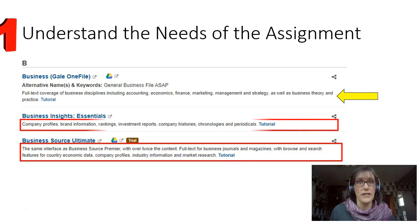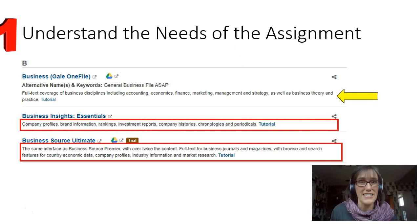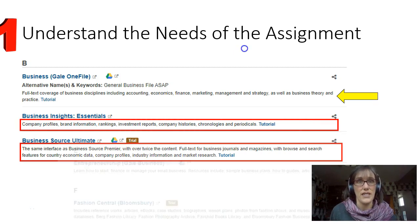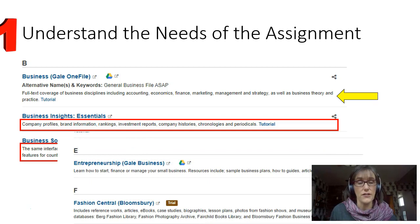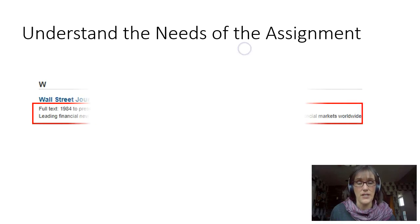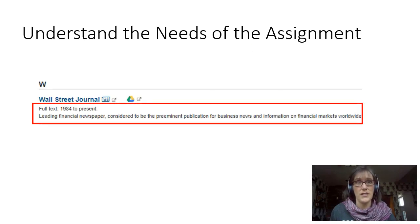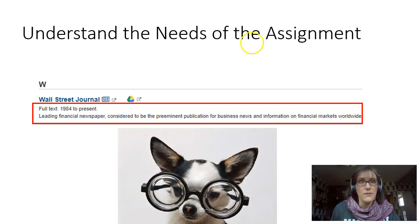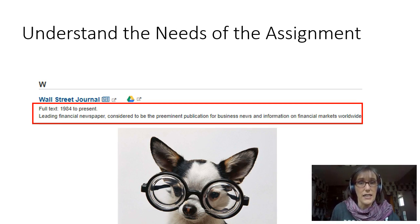Looking for company financial data and reports? Start with Business Insight Essentials. Needing a business plan or financial information? Look into the Entrepreneurship Database. And do you need up-to-date articles on current trends and economics? Look no further than the Wall Street Journal. While you may end up searching a couple of different databases, reading the descriptions and understanding what you need will save you a lot of time.